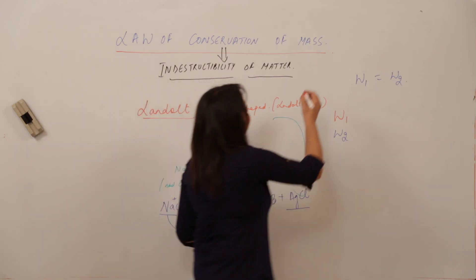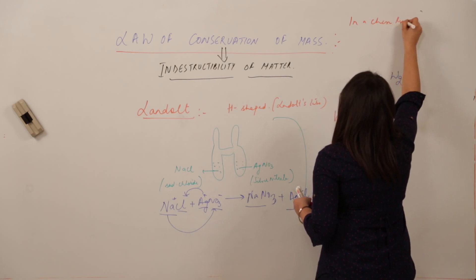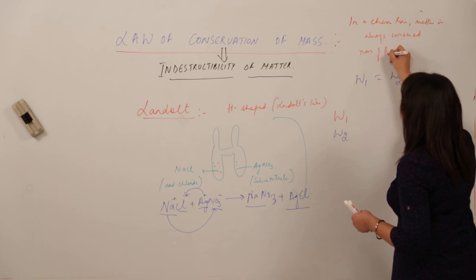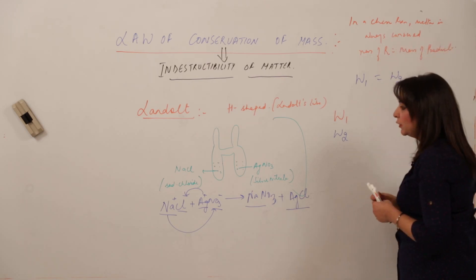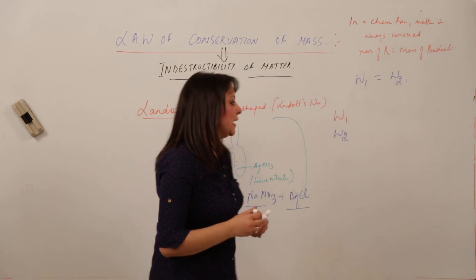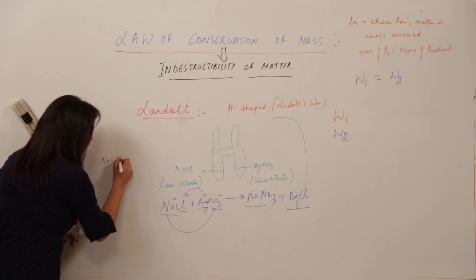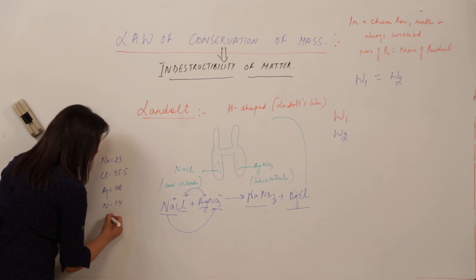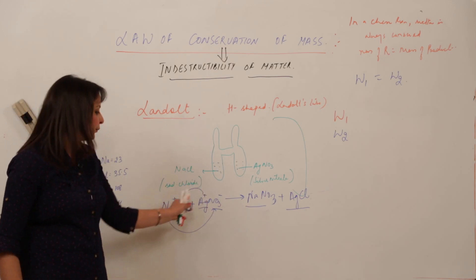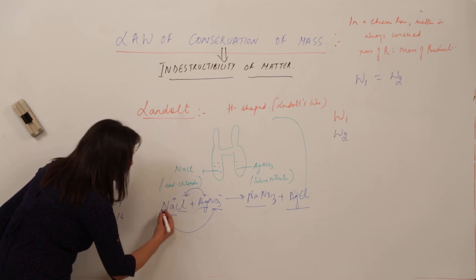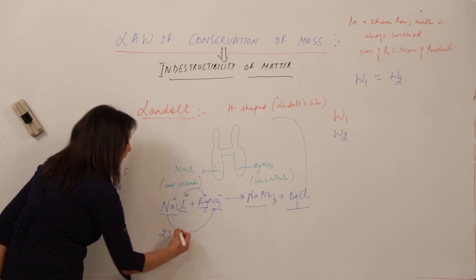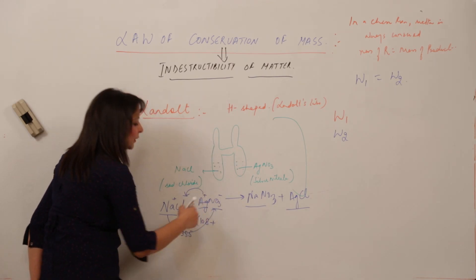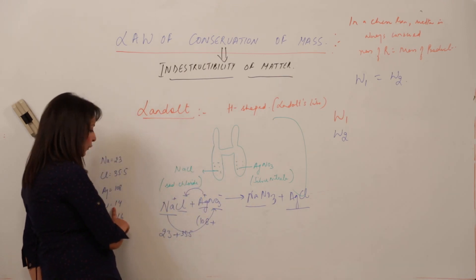This leads to the formulation of the Law of Conservation of Mass, which states: in a chemical reaction, matter is always conserved — that is, the mass of reactants is always equal to the mass of products. We can also illustrate this using atomic masses: Na = 23, Cl = 35.5, Ag = 108, N = 14, O = 16. Let us calculate the mass of the reactants: for NaCl, mass = 23 + 35.5; for AgNO₃, mass = 108 + 14 + (3 × 16).